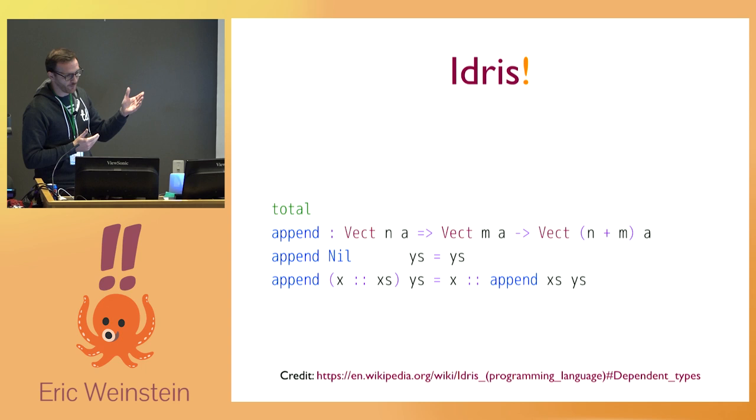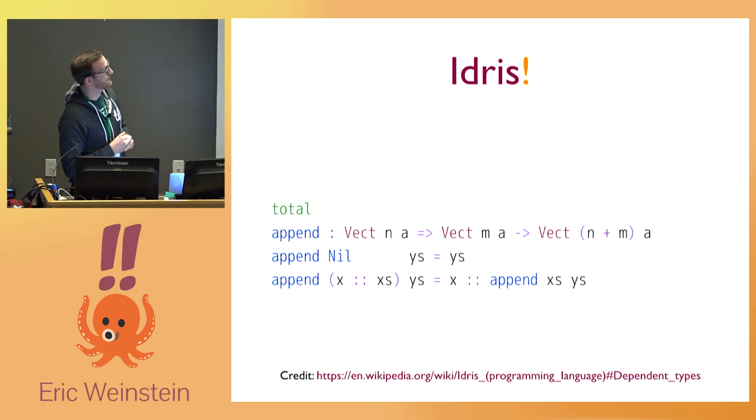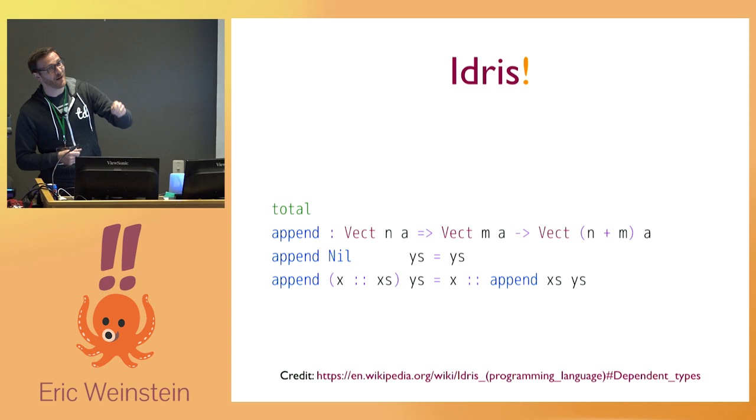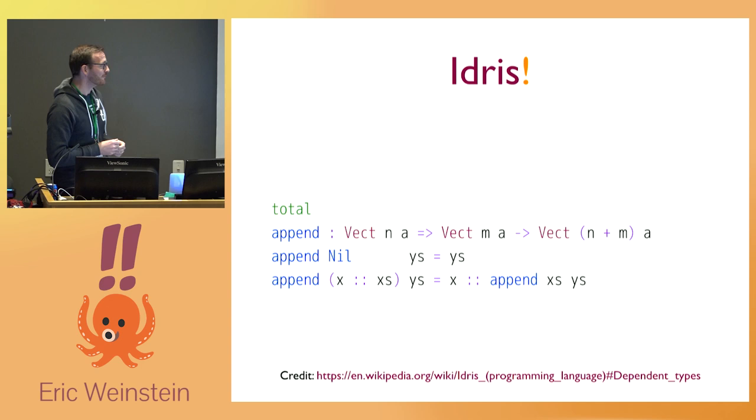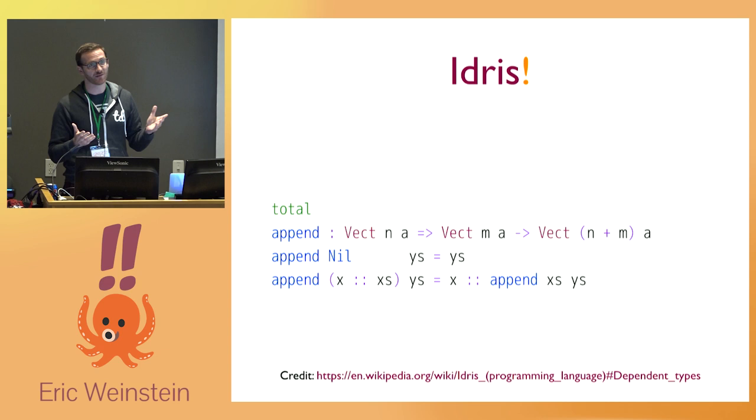Another good example — again, we have a total function, and I'll tell you about totality in a second. Append: we have a vector of length n of A's and another vector of length m of A's, and the resulting vector is of length n+m. We actually have a guarantee in the type system that if we take these two vectors and append them, they will be the right length. If we append nil, we just get what we had before. Otherwise, we take the head and rest of the first list and our y's, and recursively append x's to y's. The type system does all this for us.